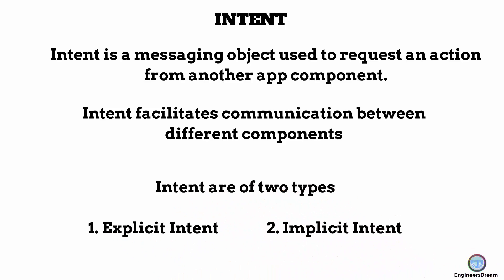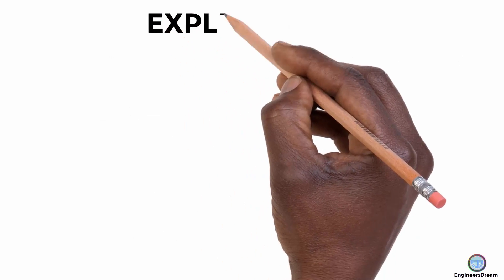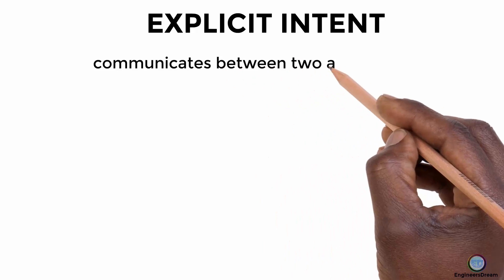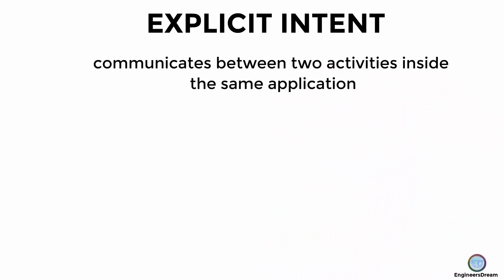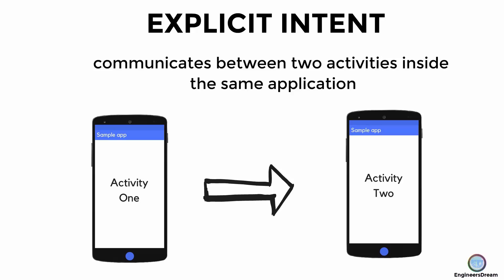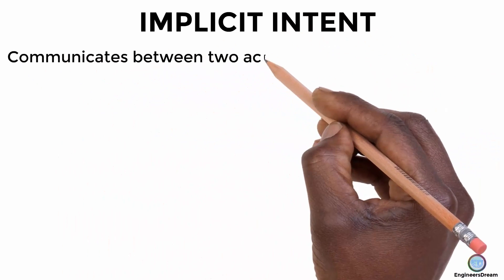First, let's look at what explicit intent is. An intent is called an explicit intent when you want to communicate between two activities inside the same application, or when you want to jump from one activity to another activity inside the same application. An intent is called an implicit intent when you want to communicate between two activities from different applications.